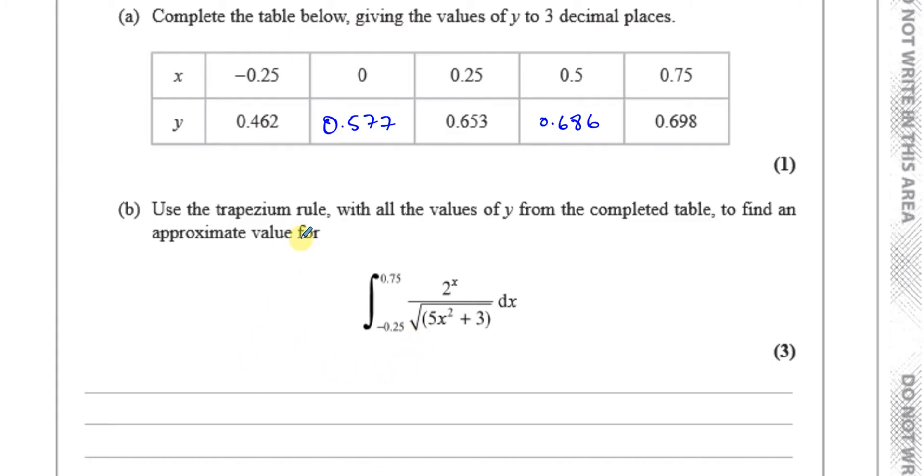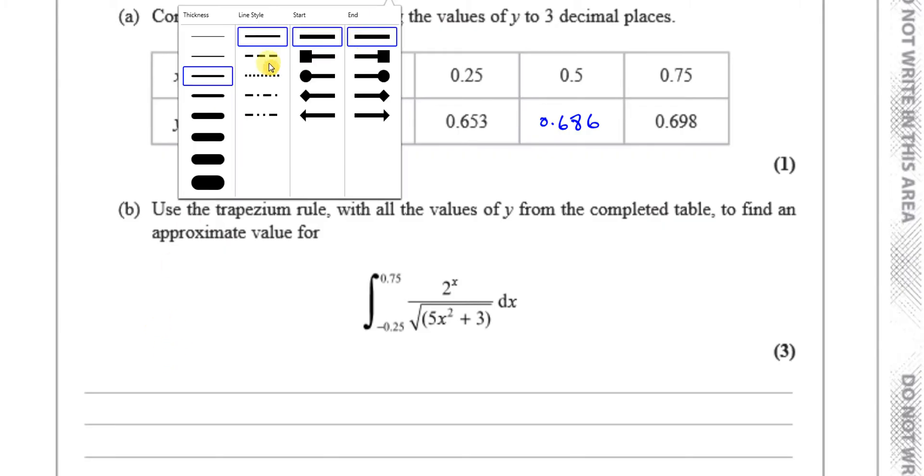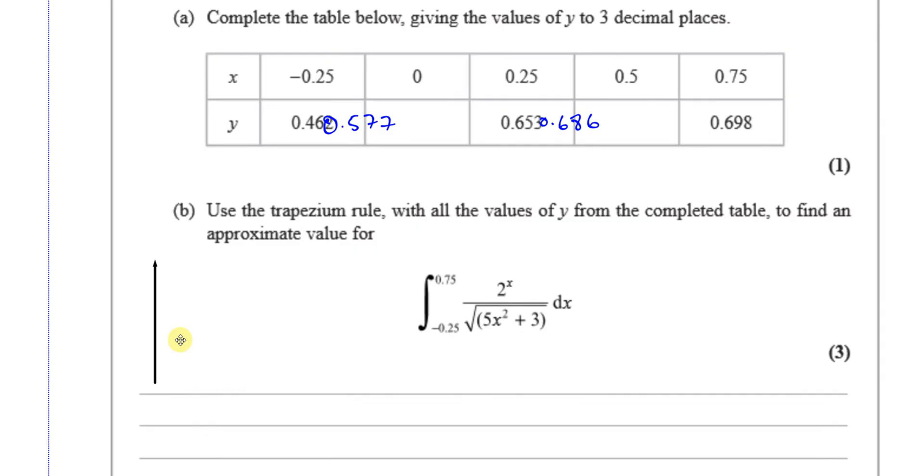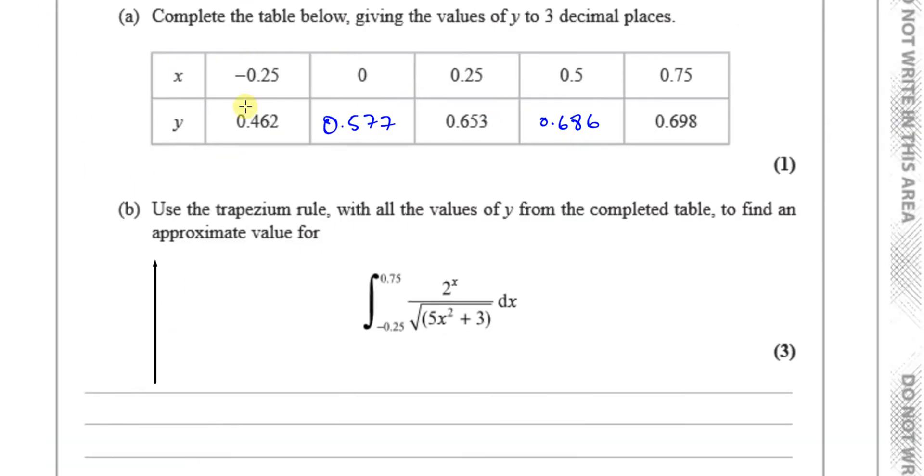The trapezium rule is where you take your function, whatever it looks like, and you basically find the area under the curve between the values given. So we go from minus 0.25 between the values given.